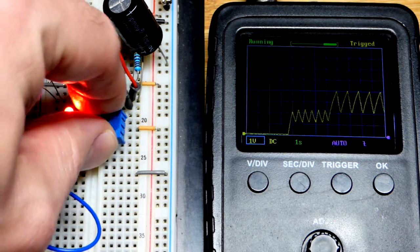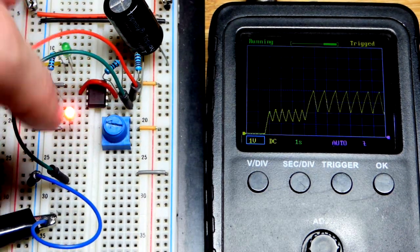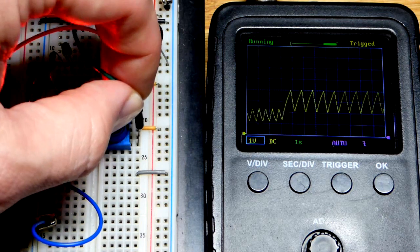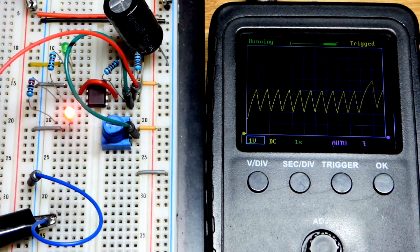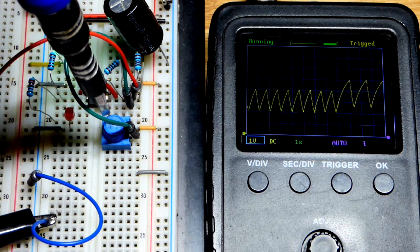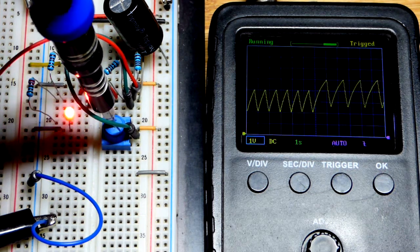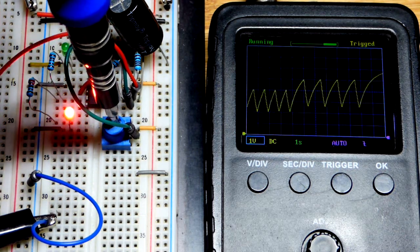Now we will shuffle this over to the red or the orange jumper up there to the red rail, the positive side of the power supply, and do the same thing. And now we got a higher voltage for both the high and the low points right there.